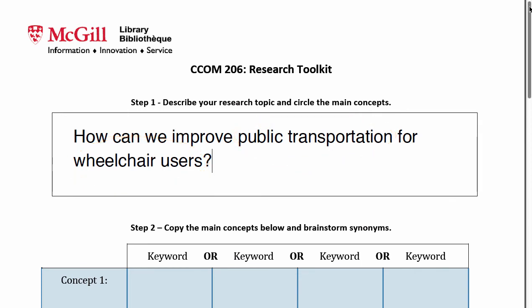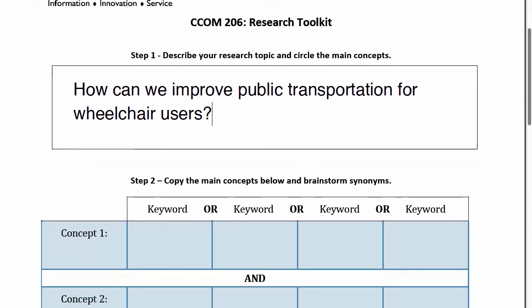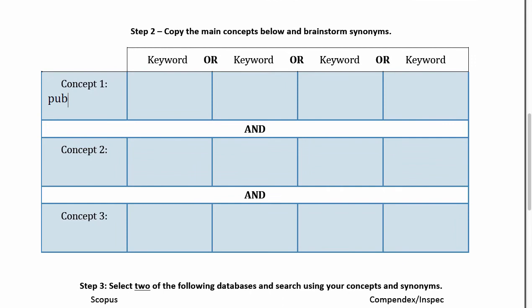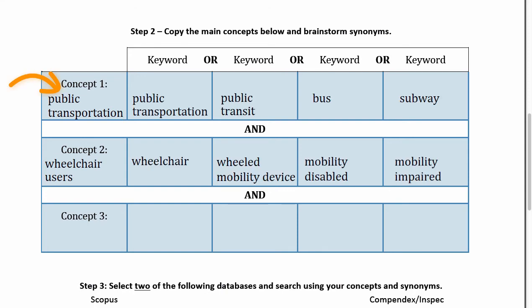With step one out of the way, we can take the concepts and add them to the table below and try to think of synonyms or other ways that the words would be described in articles. For public transportation, we might also say public transit, or bus, or subway, or any other form of public transportation that we are interested in.